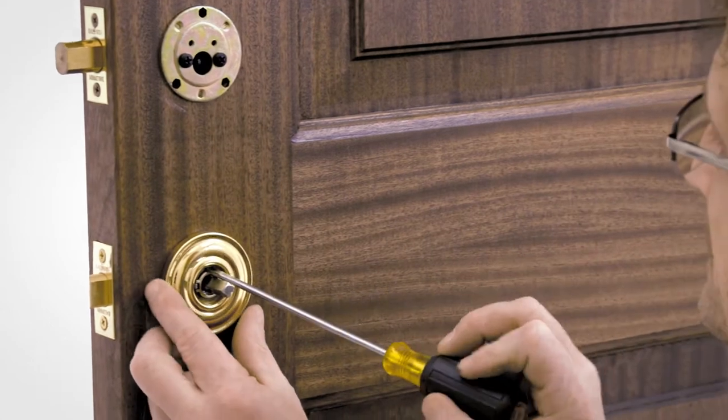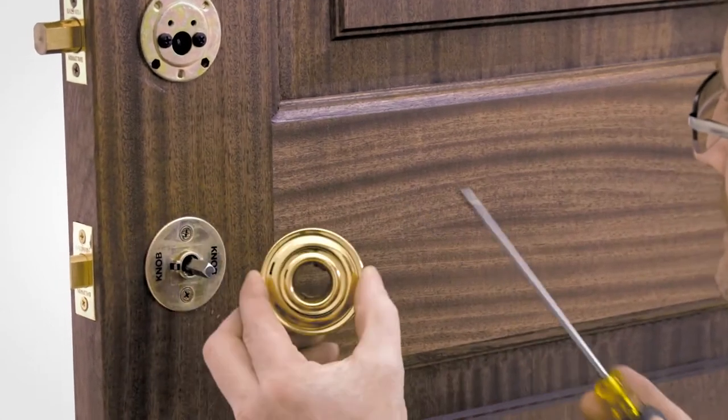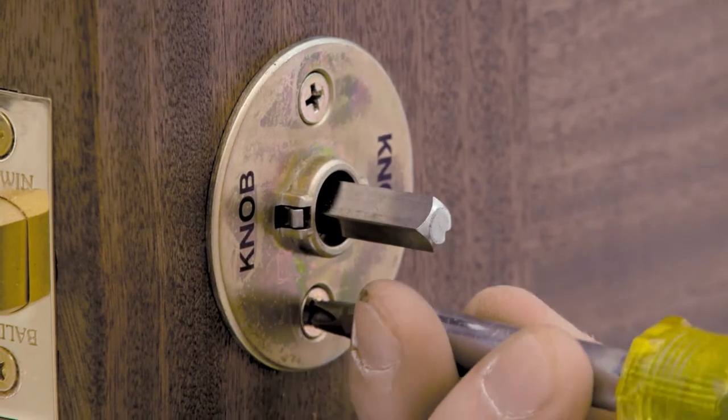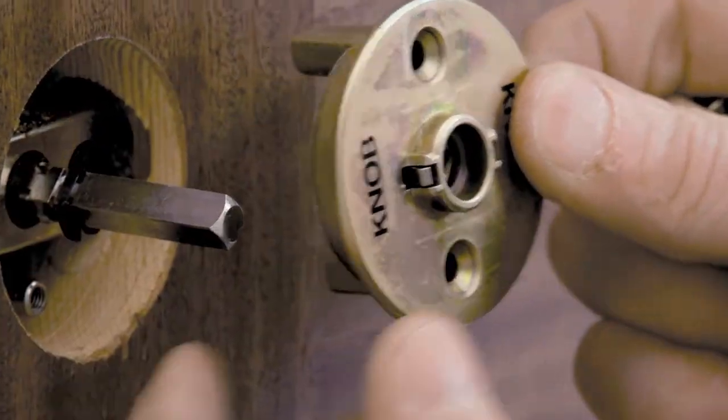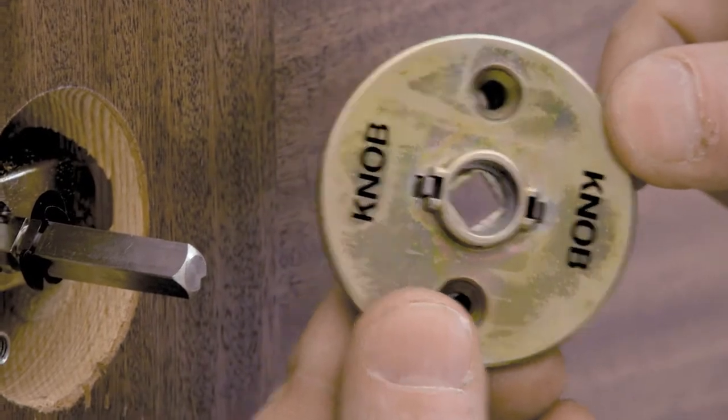Next, remove the rosette from the adapter. Remove the 10-32 by 1-1/4 inch screws securing the inside adapter. Discard the adapter and screws.